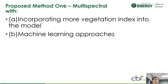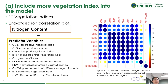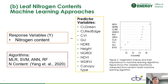Therefore, in this Cotton Challenge poster, we are proposing two methods to address the nitrogen challenges. Method one is multispectral imagery, incorporating more vegetation indices into the model, and a machine learning approach. We included 10 vegetation indices into the model and tested the correlations between nitrogen content and the 10 vegetation indices calculated from multispectral imagery. As our end-of-season data do not show strong correlations, we proposed to use machine learning algorithms to select the best predictors as well as model the nitrogen content.